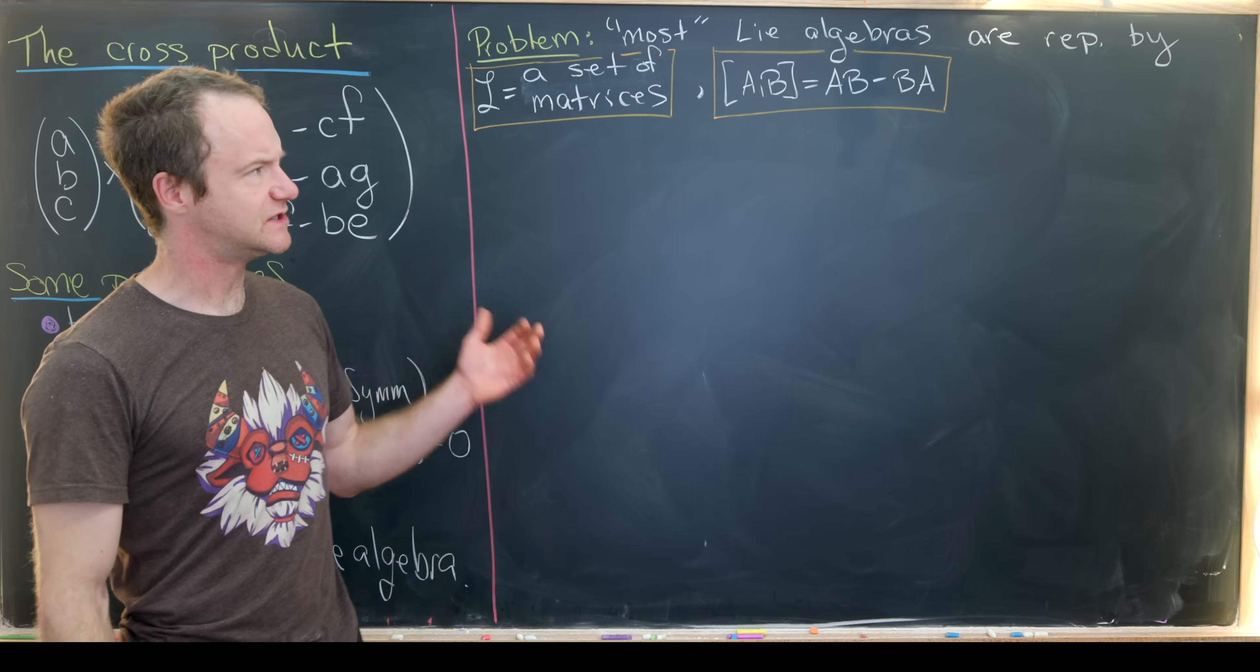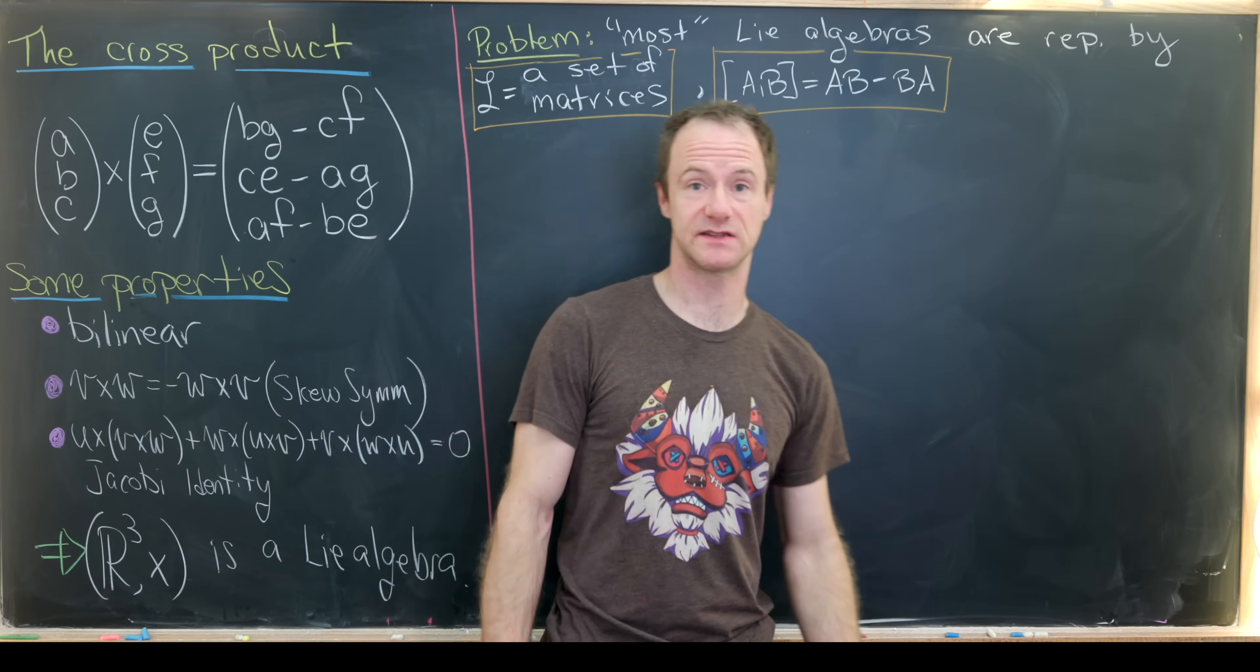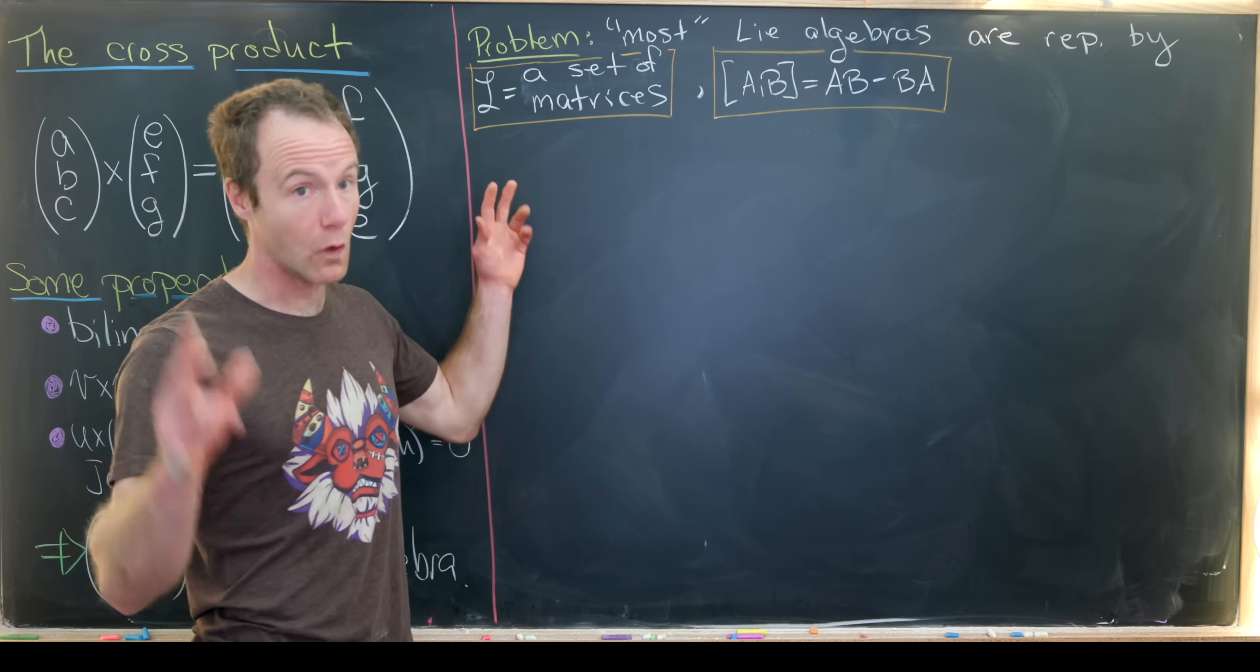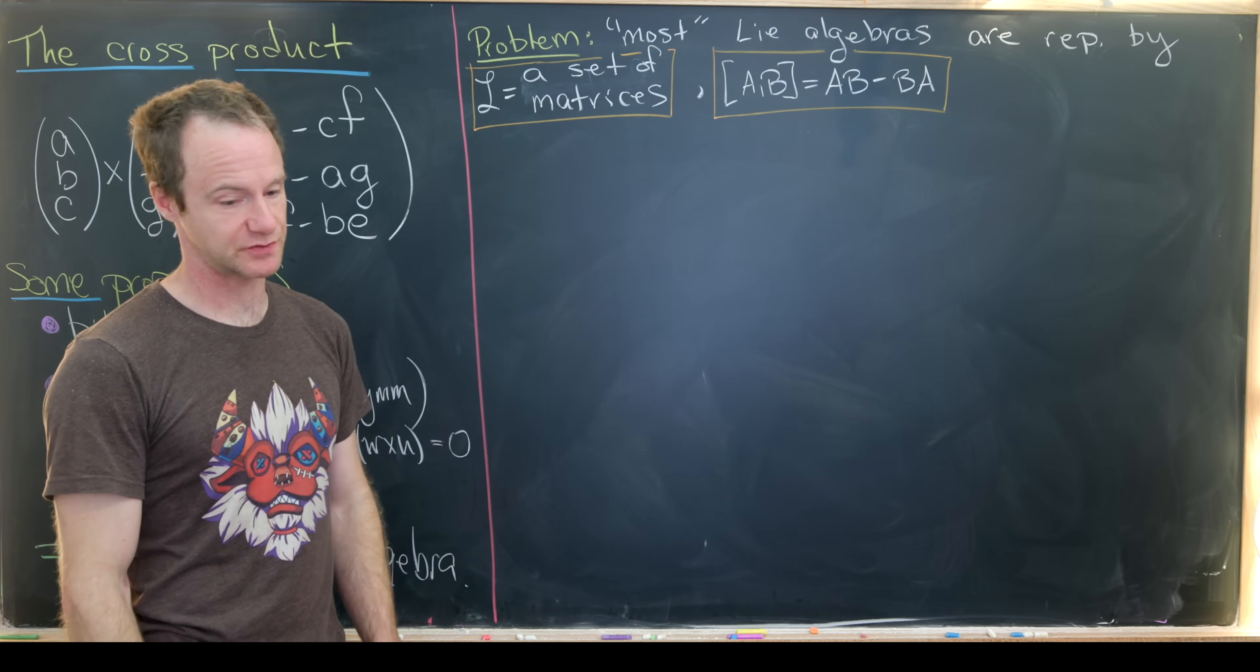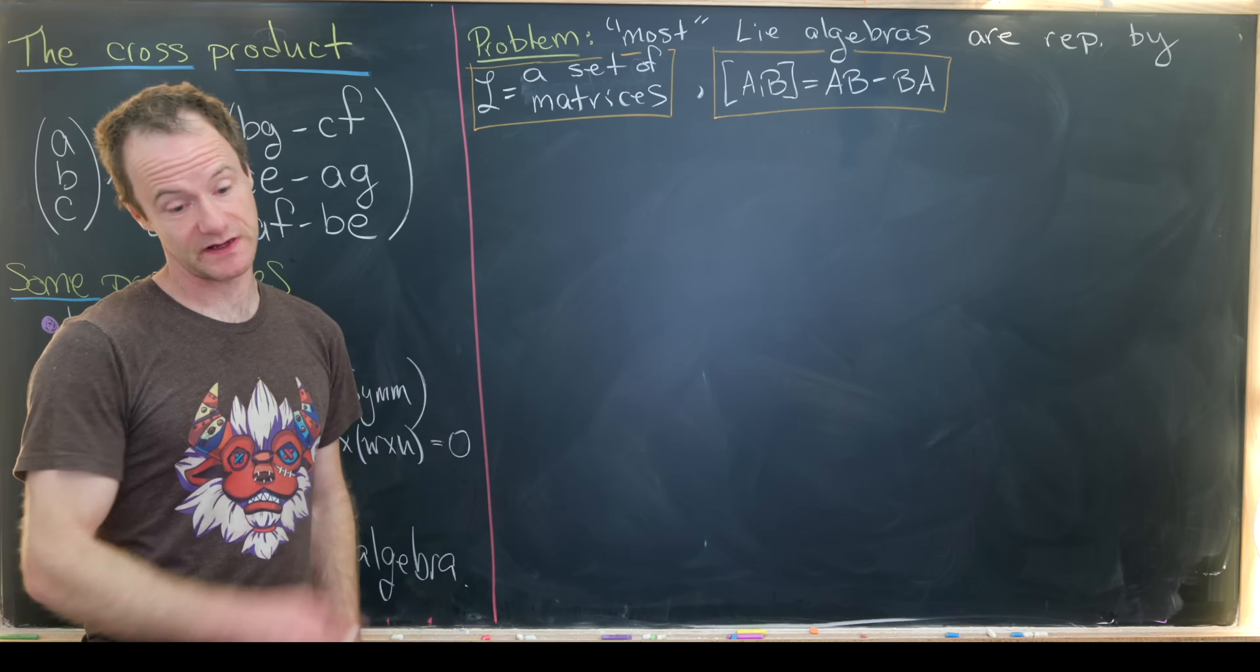So what we'd like to do is maybe take this cross product setup and write it as a more familiar Lie algebra, and that is like a matrix Lie algebra. And now how can we get started doing that?